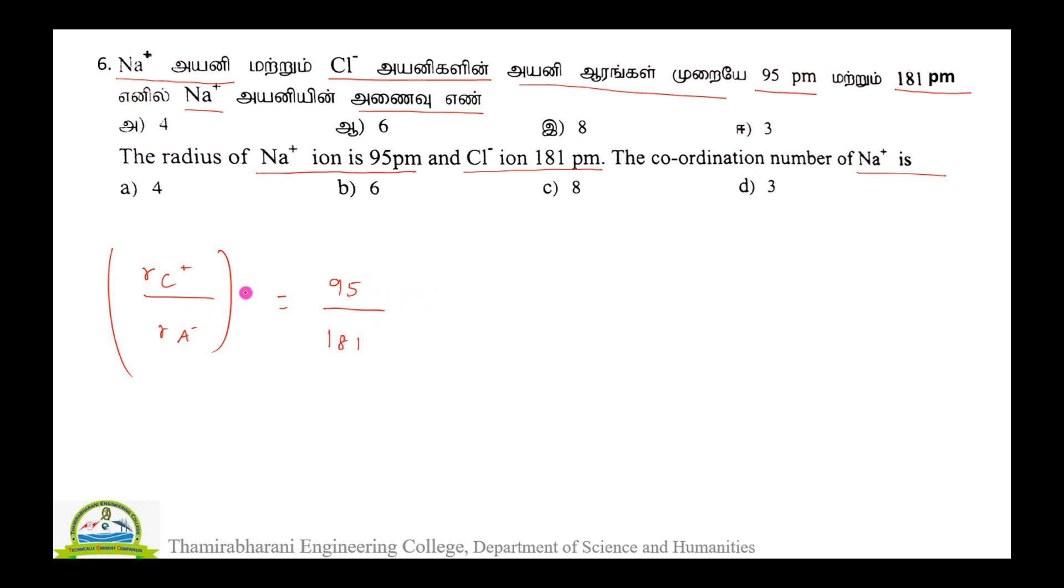We will have Rc Na+ by Cl- ratio, we will have value 0.5248. This is for sodium chloride NaCl.